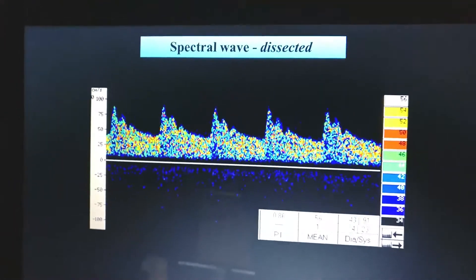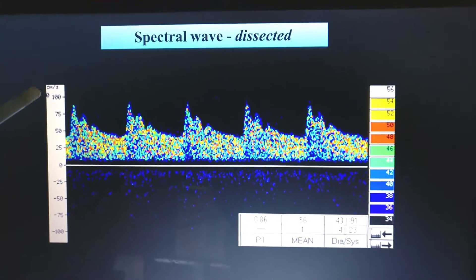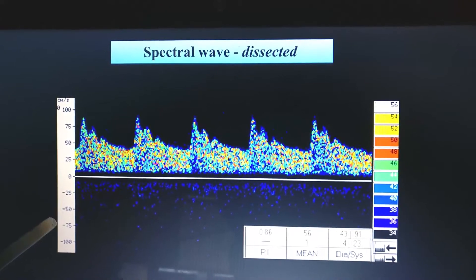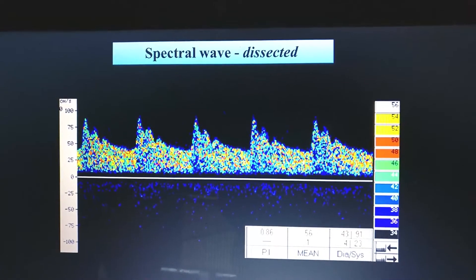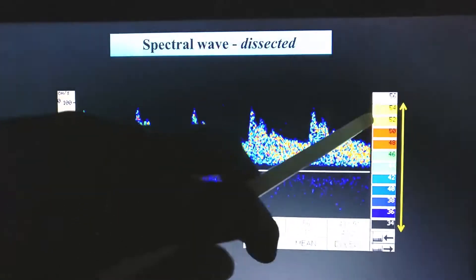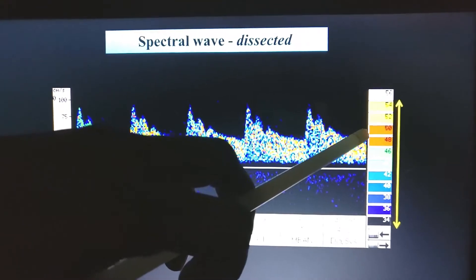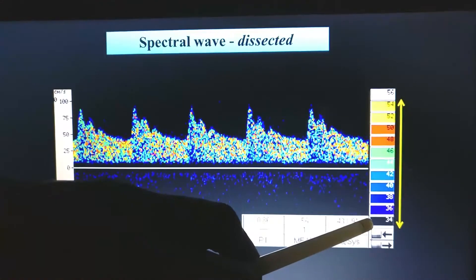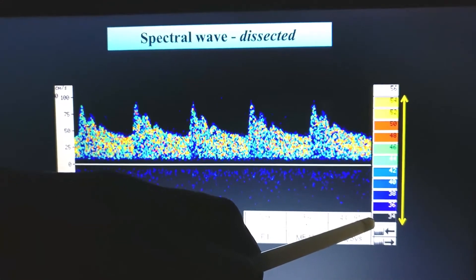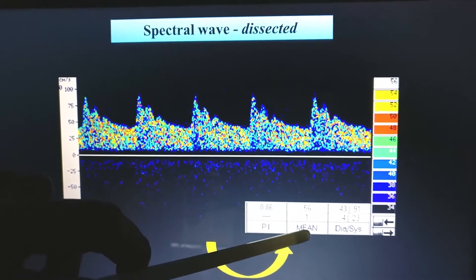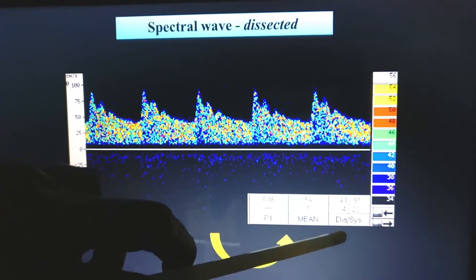Now let's dissect the spectral waveform further. On the left hand side of the spectral waveform display you have the velocity. The horizontal axis is the time. On the right hand side you get the decibels. Higher the decibel it is represented by yellow and lower the decibel it is represented as black. Also you get a display of the pulsatility index, the mean flow velocity, and the systolic and diastolic velocity.